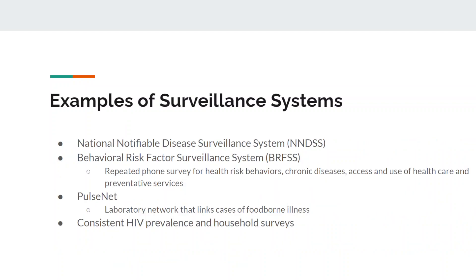Some examples of surveillance systems: the National Notifiable Disease Surveillance System, as I talked about earlier; the Behavioral Risk Factor Surveillance System, which is essentially repeated phone surveys for health risks, behaviors, chronic diseases, and access to healthcare; PulseNet, which is a massive database for linking cases of foodborne illnesses using DNA of pathogens to match sources and help solve outbreaks; and HIV prevalence and household surveys for HIV patients.